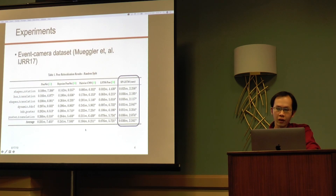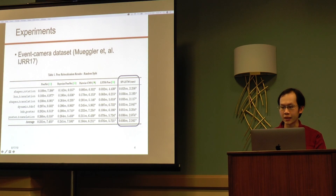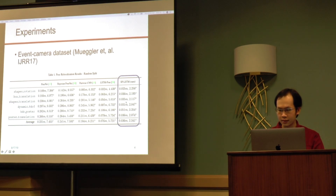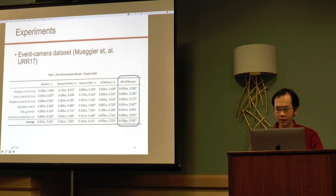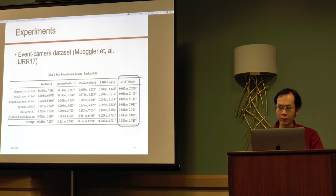We perform our experiments on the event camera dataset provided by Mugler on IJRR17. These are the results from a random split of sequences in this dataset. The pose relocalization results are significantly improved by using our SP LSTM network, which achieved the lowest error across all sequences.